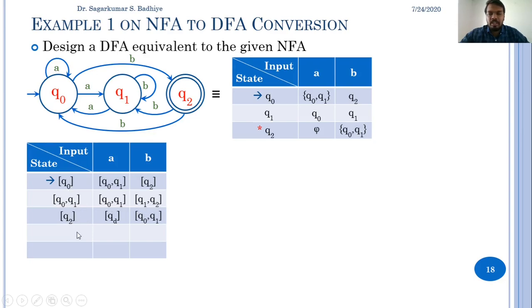Now for state [q1, q2], we find its transitions from the NFA table.